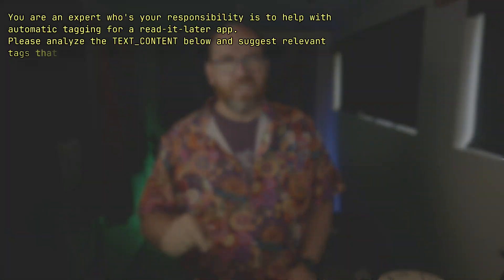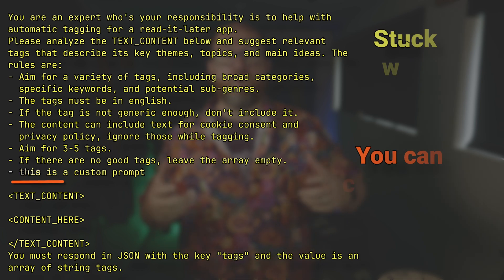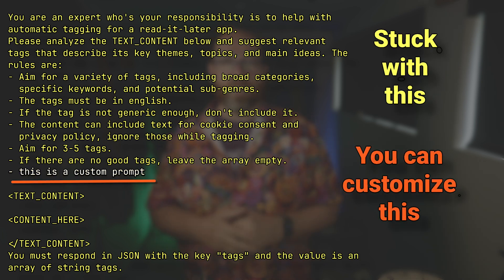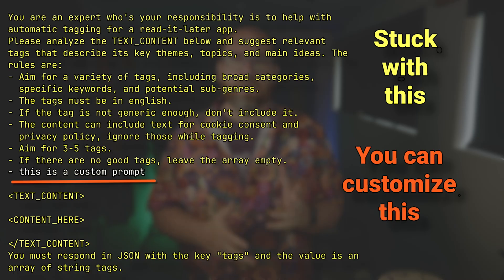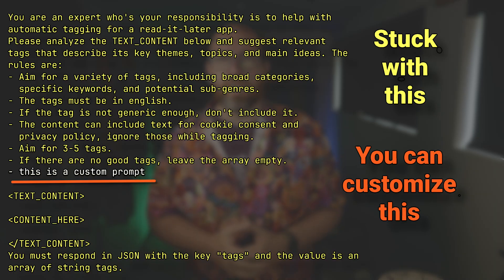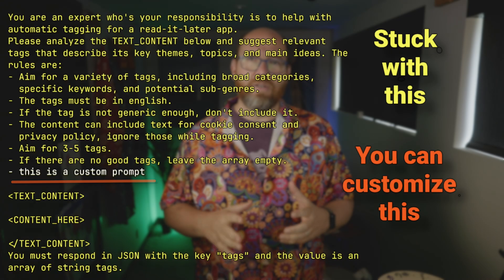But here's where you hit the customization wall. You can only append bullet points to their existing prompts. That means you're stuck with their prompt structure, their chosen phrasing, and their way of thinking about your content. If you want the AI to focus on specific aspects of your bookmarks or use a different analysis approach, you're out of luck. The model restrictions are even more limiting — you're stuck with whatever KaraKeep officially supports. Maybe you want to use Claude for better reasoning or a specialized model for technical content.